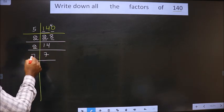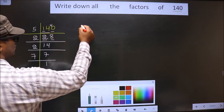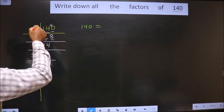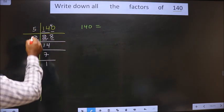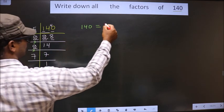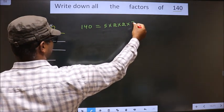Now, 7 is the prime number, so we take 7 and 1. So now, 140 is equal to the product of these numbers. That is 5 into 2 into 2 into 7.